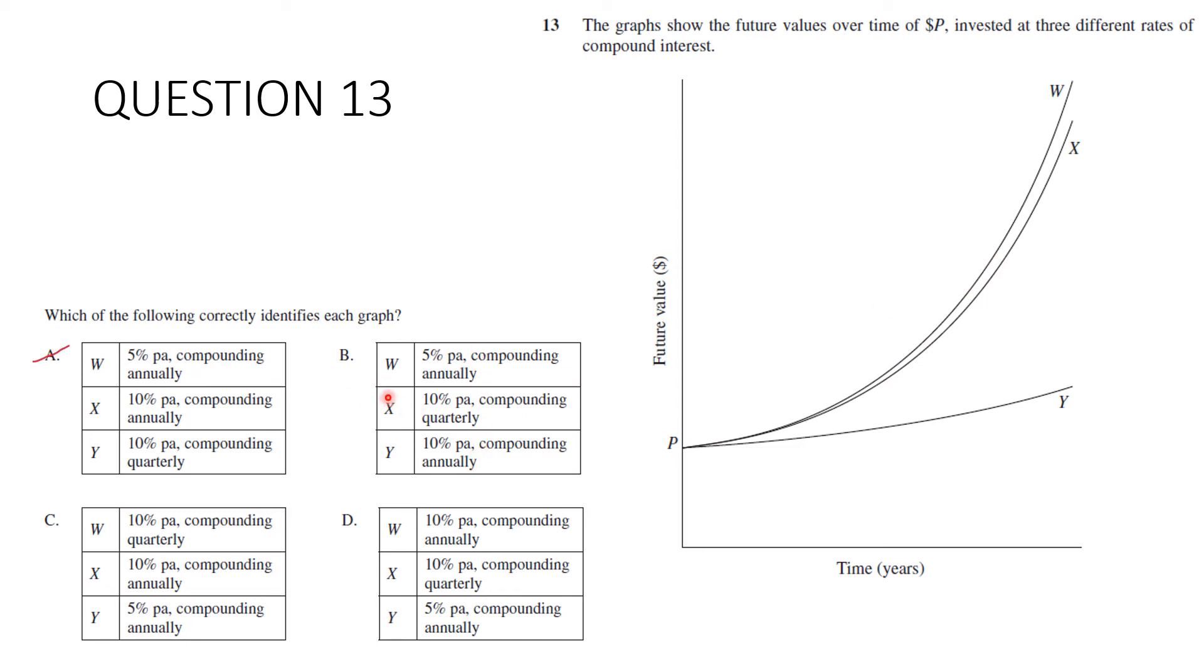Let's look at B. W is 5% compounded annually. X is 10% compounded quarterly. This one's wrong as well. This one should be higher. It should be even higher than that one because the more often you compound, the more interest you get. So B is out. Let's look at C. 10% per annum compounded quarterly. 10% per annum compounded annually. 5% per annum compounded annually. This one's a possibility. Let's just leave that one for a moment. Let's look at D. 10% per annum compounded annually. 10% per annum compounded quarterly. Ah, this one's back the front. So this one here should be higher. The more often you compound, the more money you get. So this one's wrong. D is wrong. And so our answer is C.